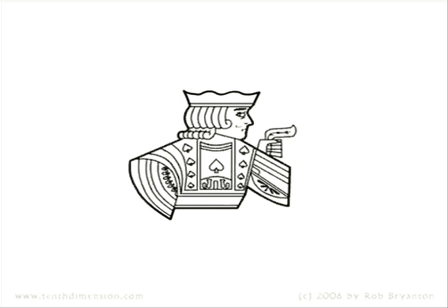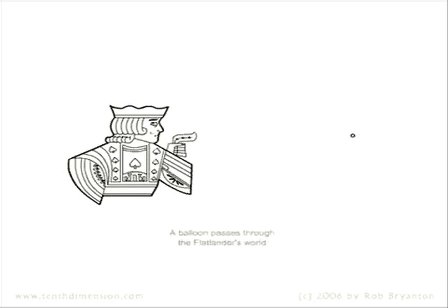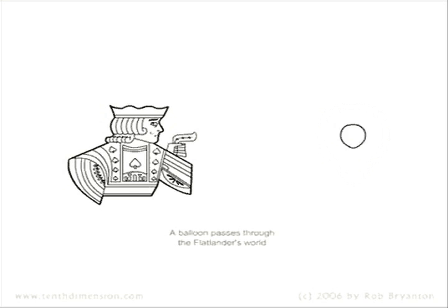A flatlander, trying to view our three dimensional world, would only be able to perceive shapes in two dimensional cross sections. A balloon, for instance, would start as a tiny dot, become a hollow circle which inexplicably grows to a certain size, then shrinks back to a dot before popping out of existence.